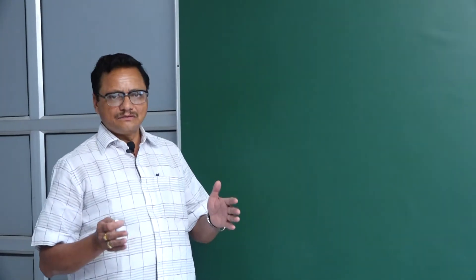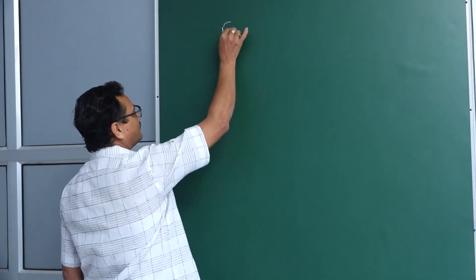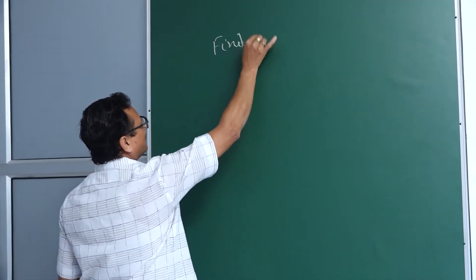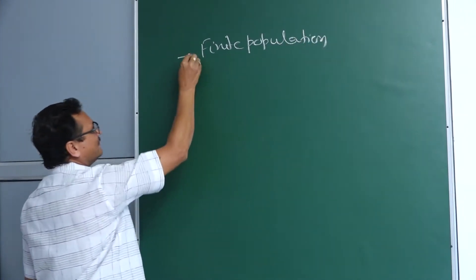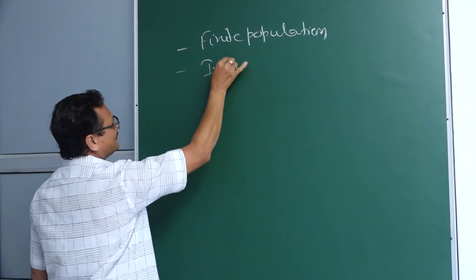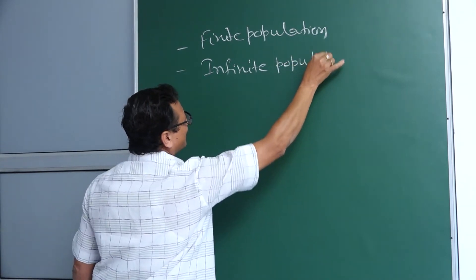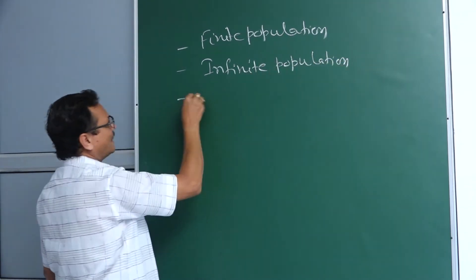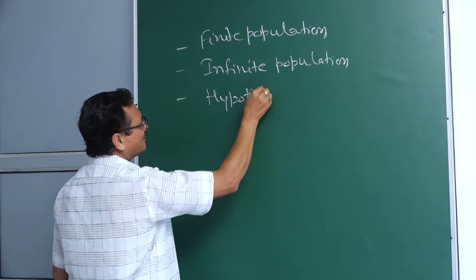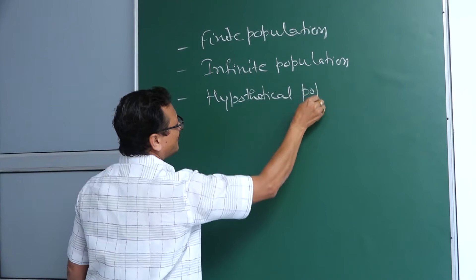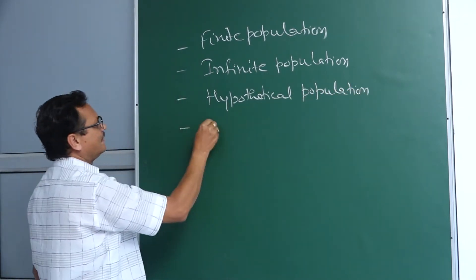There are four different populations: finite population and infinite population, hypothetical population and real population.